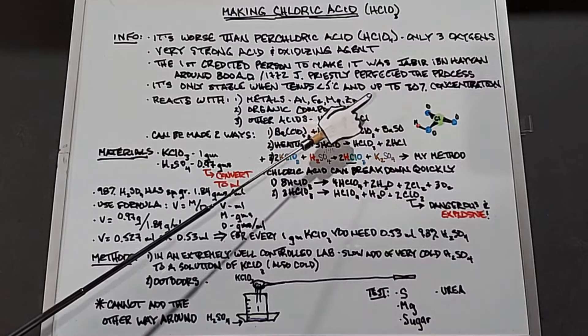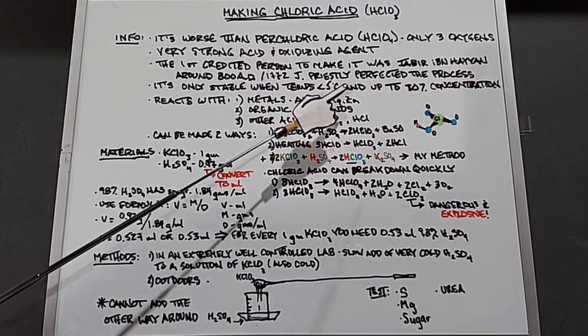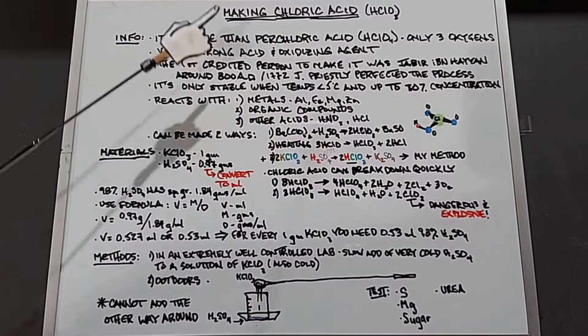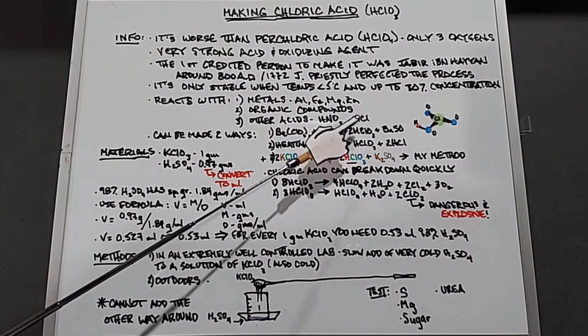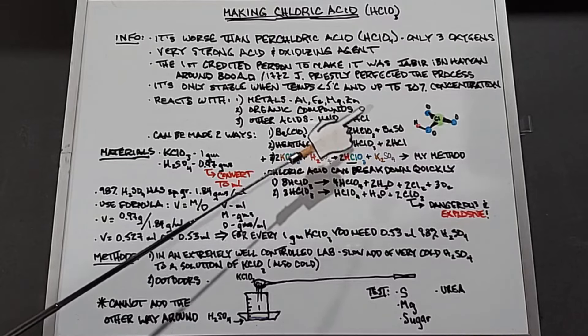Either a higher temperature or higher concentration causes it to become very reactive and sometimes explosive on its own. We know that chloric acid reacts with metals such as aluminum, iron, magnesium, and zinc. It's also very reactive with organic compounds, especially alcohols, and with other acids such as nitric acid or hydrochloric acid.